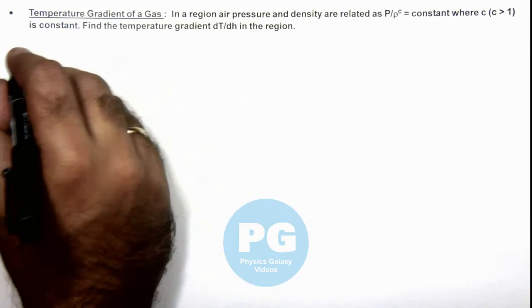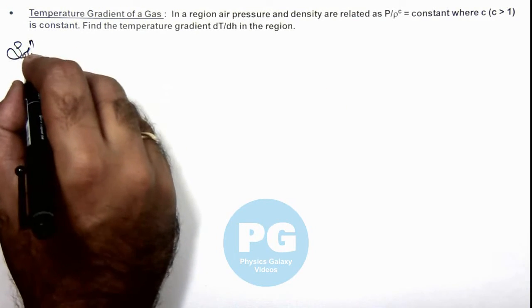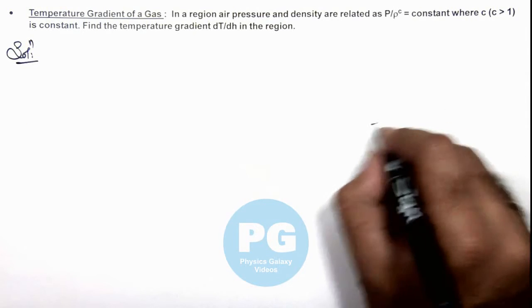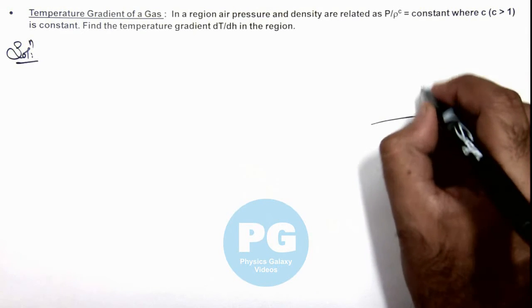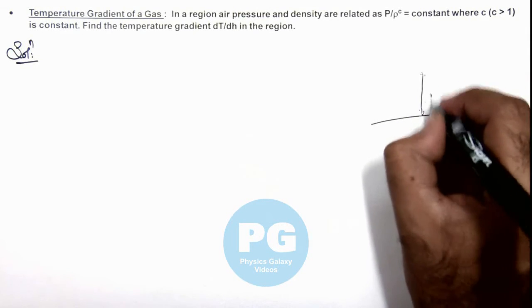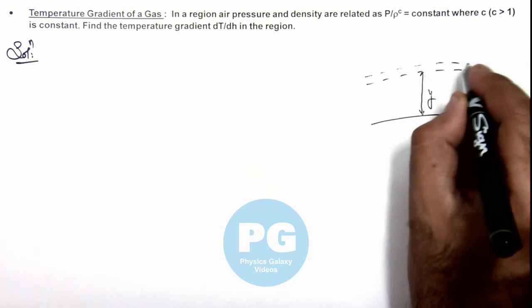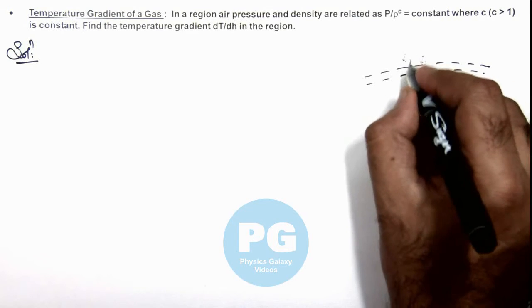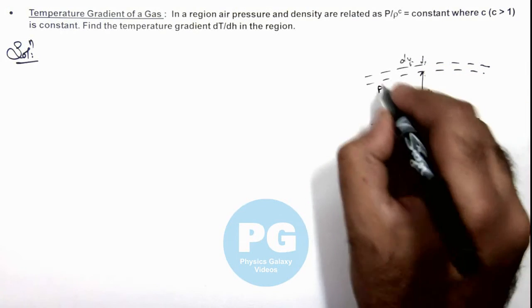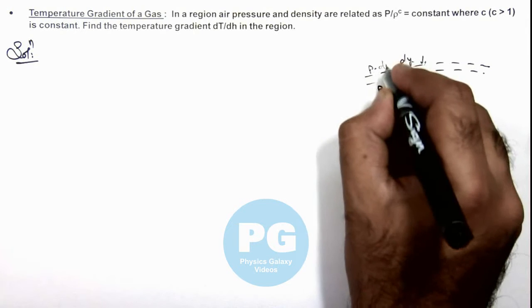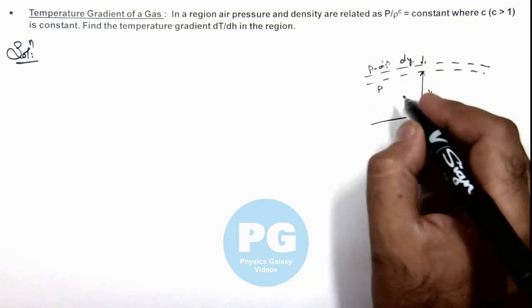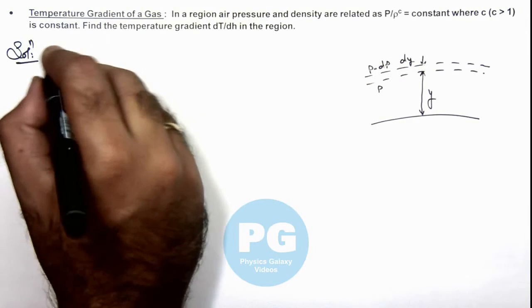Here, we already studied in barometric relation that in a region if this is ground level, and at a height y if we consider an elemental atmospheric layer of width d y, then pressure varies from p to p minus d p in the layer of width d y.